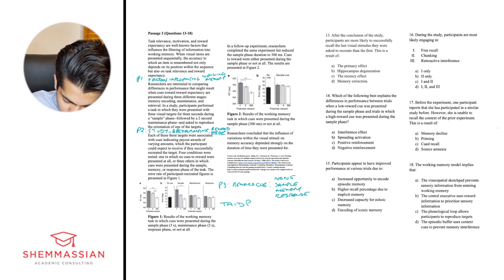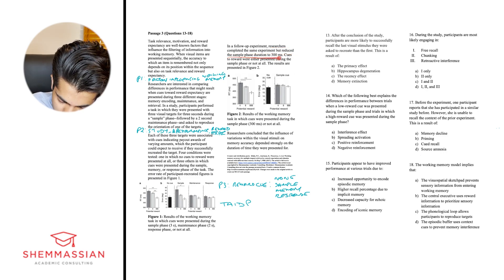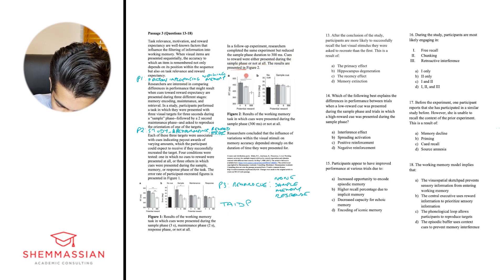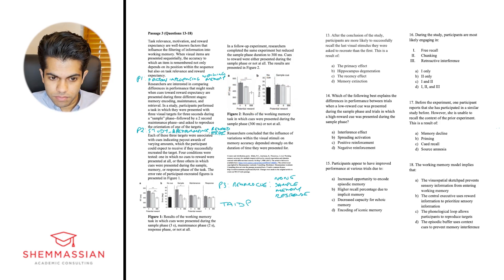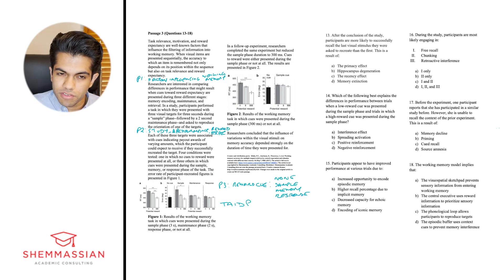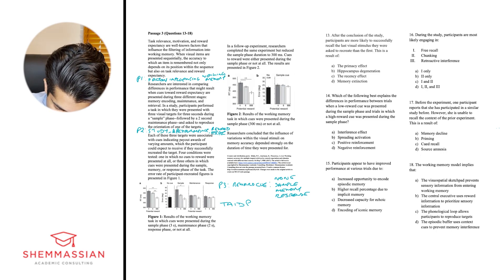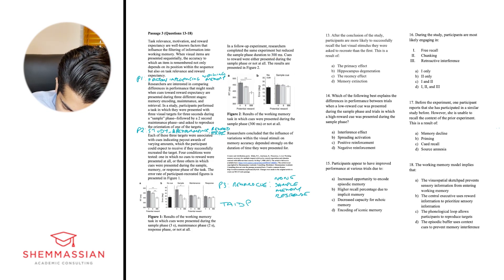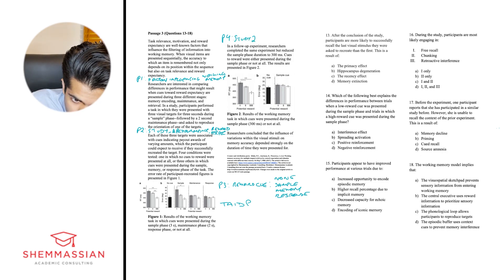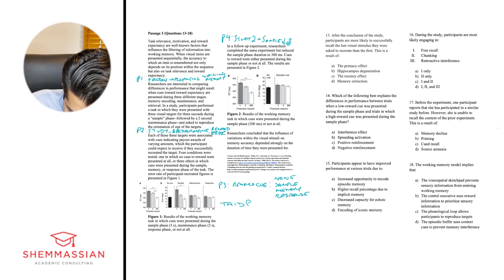In a follow-up experiment, researchers completed the same experiment but reduced the sample phase duration to 300 milliseconds. Cues to reward were either presented during the sample phase or not at all. The results are presented in Figure 2. To summarize this paragraph: it's basically the same study but with one change — the sample phase decreased by 300 milliseconds. I'd write 'Study 2 — sample decreased 300ms.'